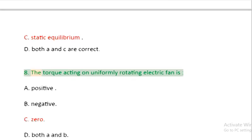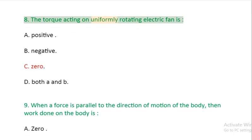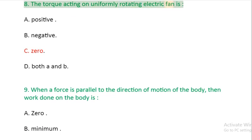Question 8: The torque acting on uniformly rotating electric fan is: A: positive. B: negative. C: zero. D: both A and B.